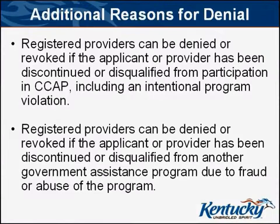Additional reasons for denial: Registered providers can be denied or revoked if the applicant or provider has been discontinued or disqualified from participation in the child care assistance program, including an intentional program violation. Registered providers can also be denied or revoked if the applicant or provider has been discontinued or disqualified from another government assistance program due to fraud or abuse of that program.